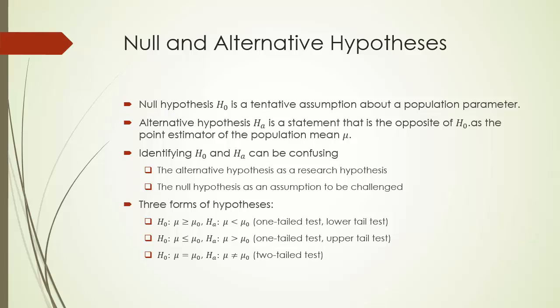The two examples mentioned earlier indicate that there are different forms of hypotheses. Indeed, there are three forms. The first kind is the hypothesis of lower tail test. Algebraically, H0 is mu greater than or equal to mu zero, and HA is mu less than mu zero.